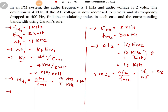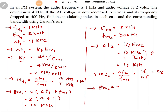Now, bandwidth as per Carson's rule: Bandwidth 1 equals 2 into (delta F1 plus FM1), which is 2 into (4 kilohertz plus 1 kilohertz), giving 10 kilohertz. Bandwidth 2 equals 2 into (delta F2 plus FM2), which is 2 into (16 plus 0.5), giving 33 kilohertz. That is how we solve this problem.